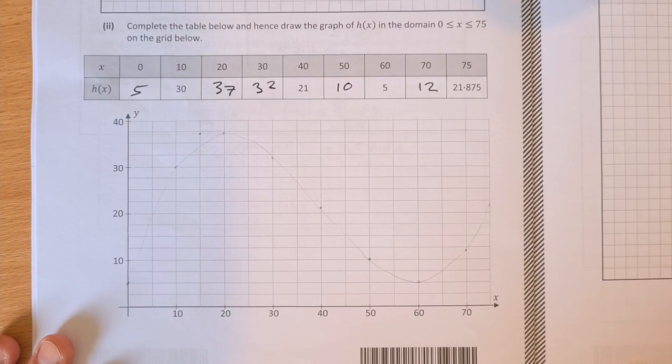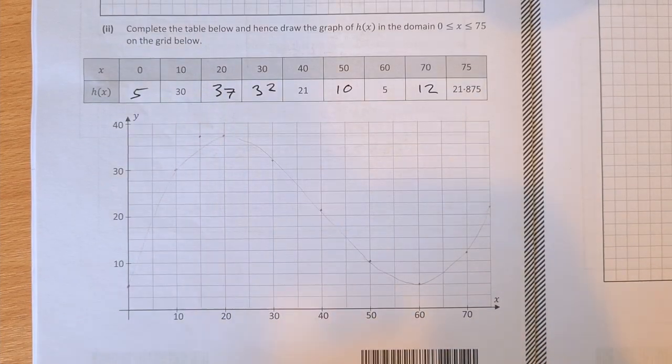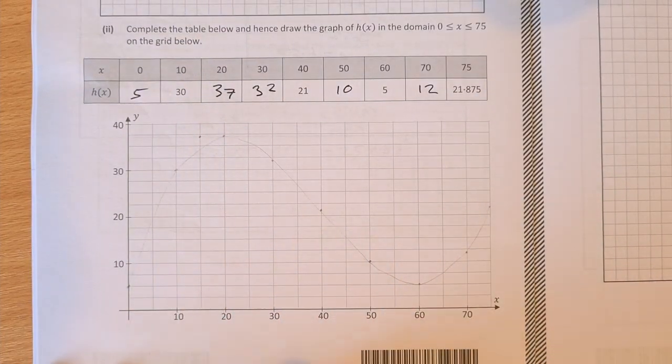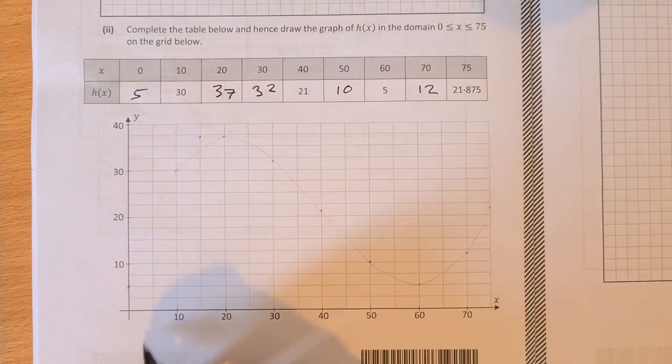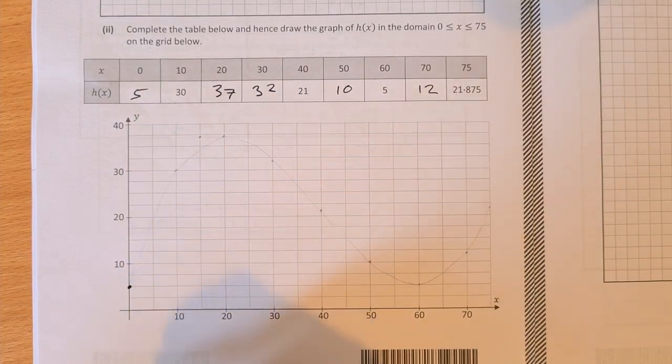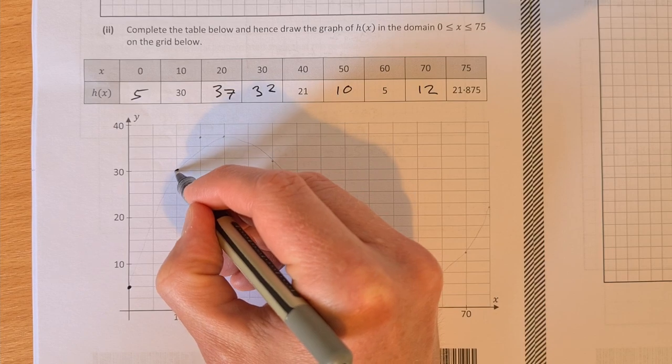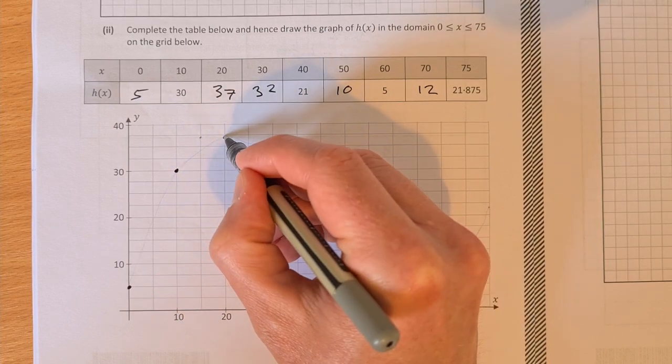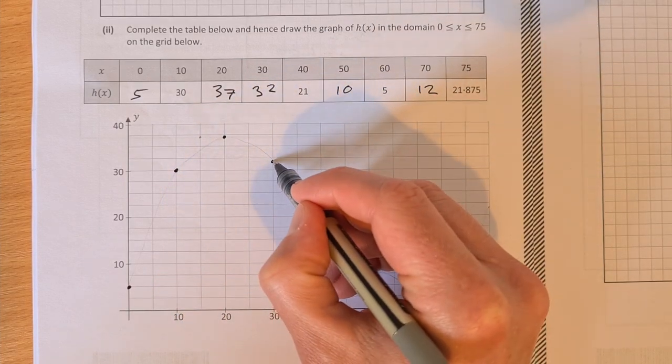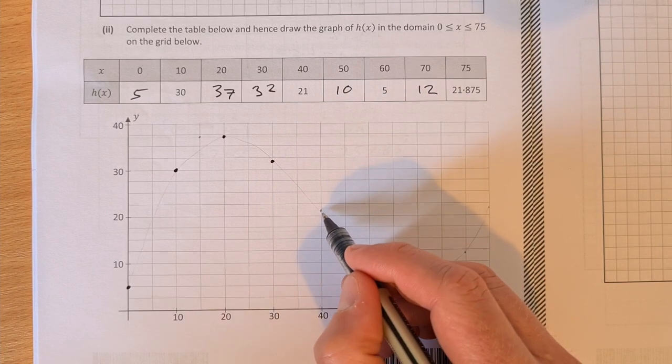Then we want to draw it into the table below. So I've already sketched it in pencil, but just to show you. So 0, 5, there it is. 10, 30, 20, 37, 30, 32, 40, 21.